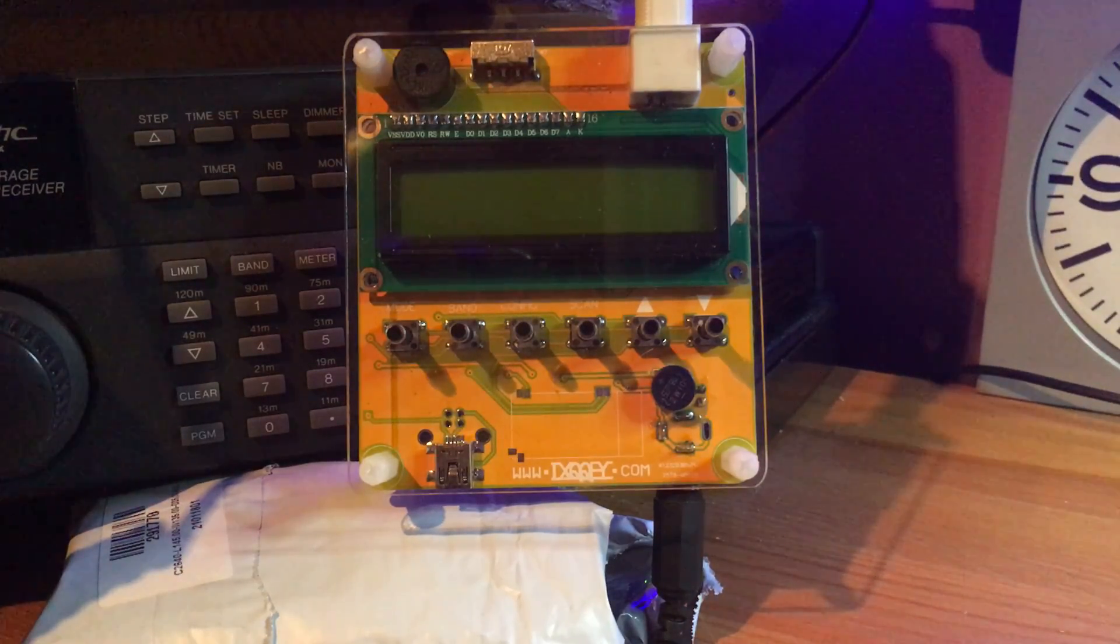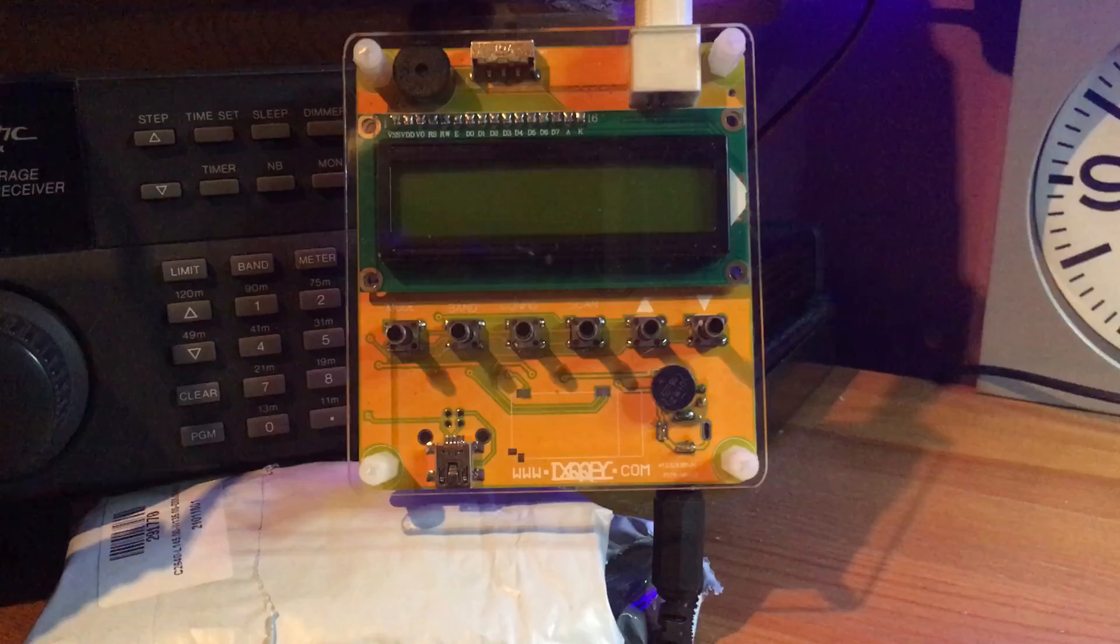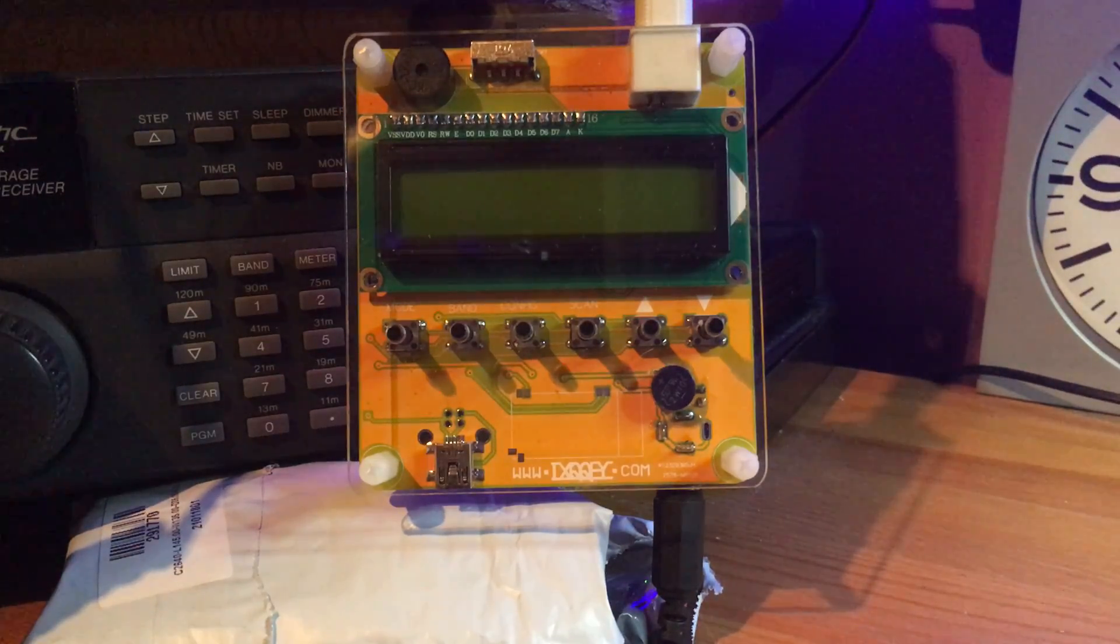But on this score, I do believe it's a winner. 40 pounds delivered, the SARK 100 antenna analyzer, and it covers all the HF bands from 160 meters all the way up to 6 meters, 50 megahertz. So it's 1.2 megahertz right up to 50 megahertz.